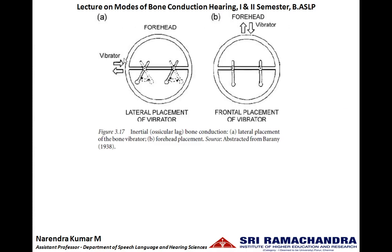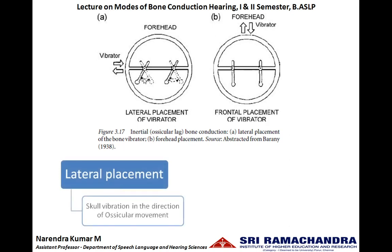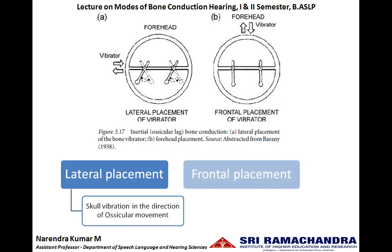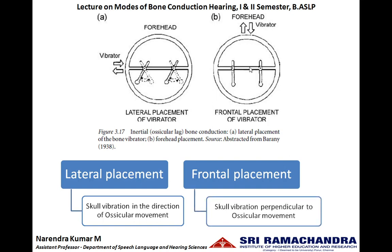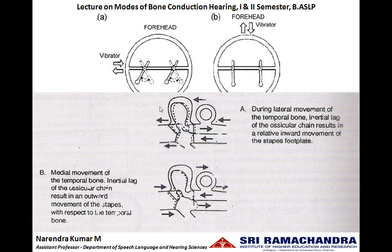Imagining the whole skull bone with the ossicles suspended in the middle ear cavity: when the bone vibrator is placed at the side of the head, this lateral placement results in skull bone vibration in the direction of ossicular movement, enhancing ossicular chain vibration. With a more frontal placement of the bone vibrator, the skull bone vibration will be perpendicular to the movement of the ossicles, resulting in zero or very minimal movement of the ossicles.